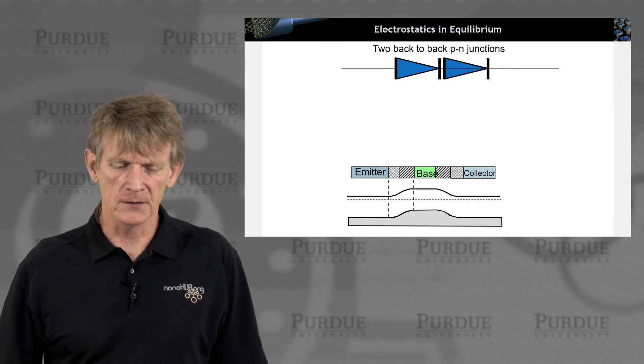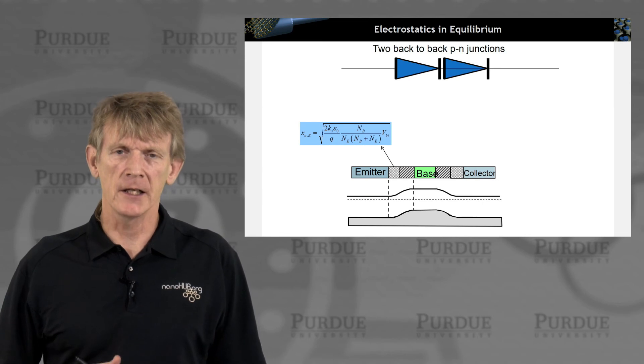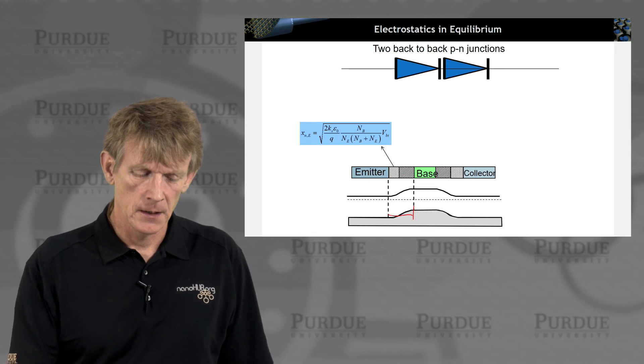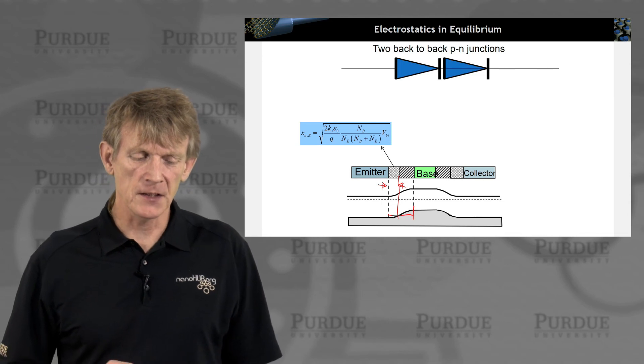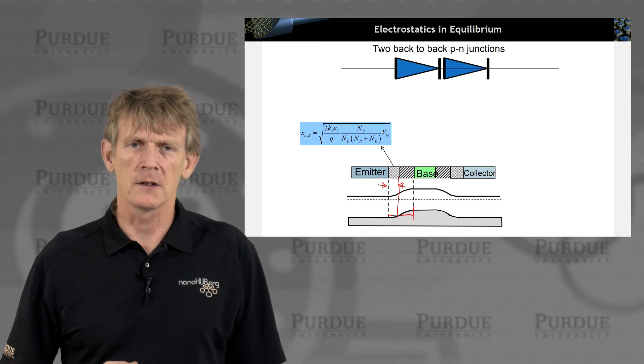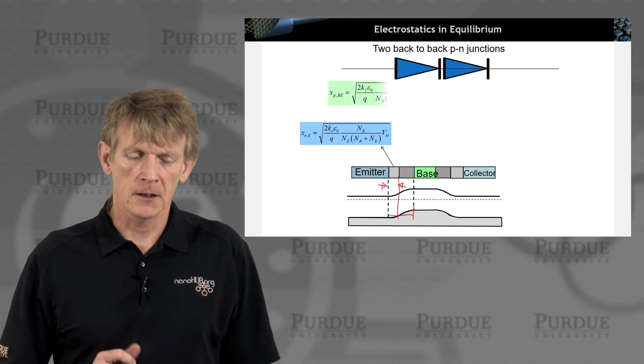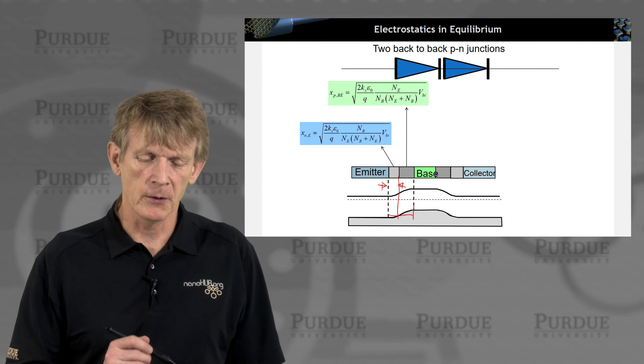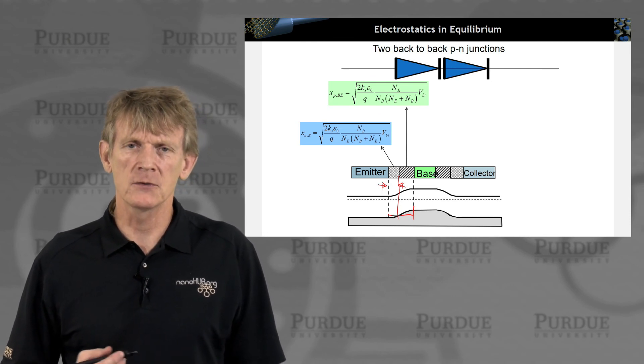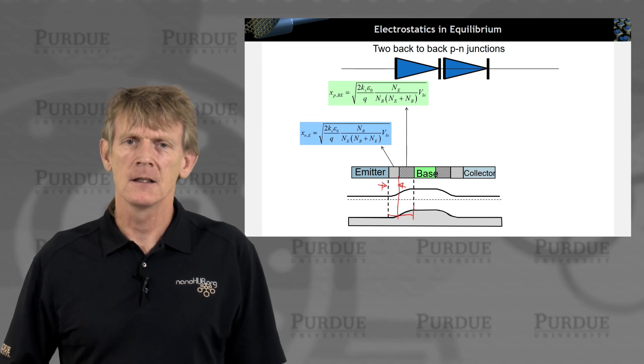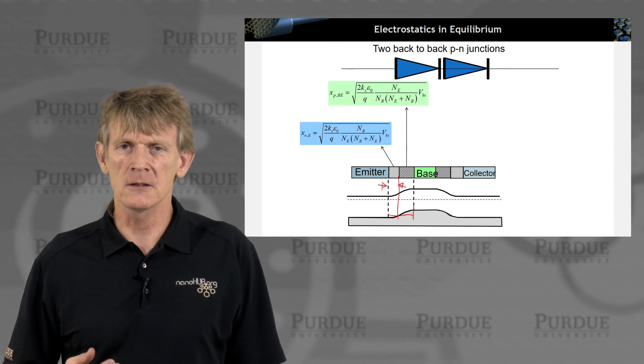So we have two junctions like this. And we have calculated in the past that we have a depletion region here. And the depletion region has a certain extent in the emitter side. And we have associated that with a built-in potential and with a doping. In equilibrium, we have the other parts on the P side, the length of this depletion region. We have charge balance between those two doping regions where we have depleted the free carrier.